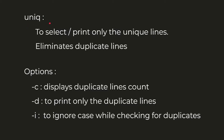The unique command prints only the unique lines from the input data; it eliminates all duplicate lines. Executing the unique command without any parameters simply omits the duplicates and displays only the unique lines. Its important options are -c, -d, and -i. The -c option displays the duplicate line count along with the line, indicating how many times that line has been repeated.